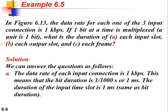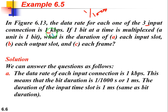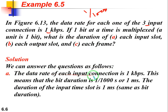Coming to the example in figure 6.13: the data rate for each of the three inputs is one kbps. One bit at a time is multiplexed. The speed is one kbps, so one bit duration is one divided by one thousand — that equals one millisecond. The duration of the input time slot is one millisecond, the same as bit duration.